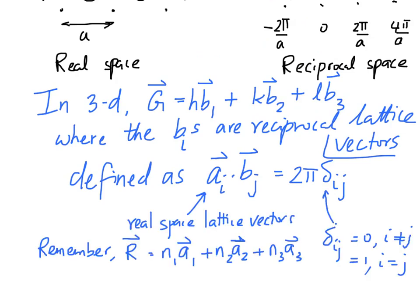So, note the beautiful analogy between the r vector and the g vector. The r vector is written as a linear combination of the real space unit vectors or lattice vectors a₁, a₂, a₃, where n₁, n₂, n₃ are integers. Likewise, the g's are written as a linear combination of the reciprocal space unit vectors or lattice vectors b₁, b₂, and b₃, where h, k, l are integers.